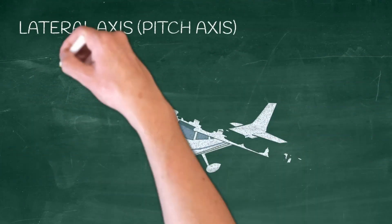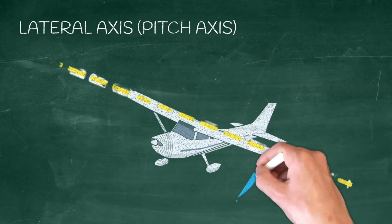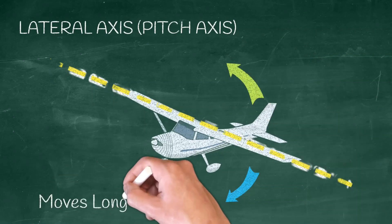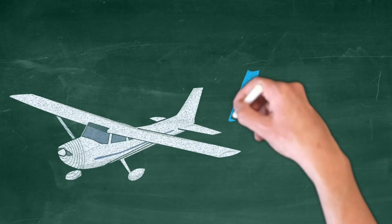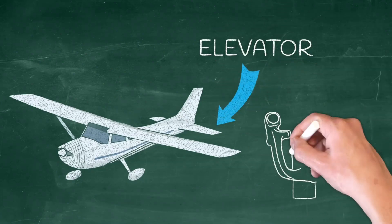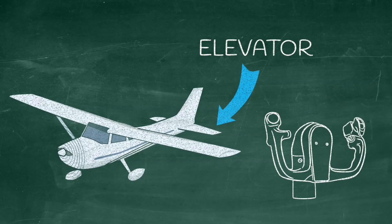The first way an airplane moves is on its lateral axis also known as the pitch axis. The big thing to remember is that the airplane pitches up and down and moves longitudinally. Longitudinal movements on the lateral axis are made by using the elevator. We use the yoke to make this control input.